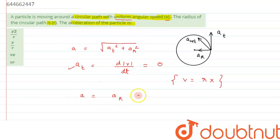So the acceleration we are getting is radial, and the formula for radial acceleration can be written as v squared by r, or it can be written as r omega squared.